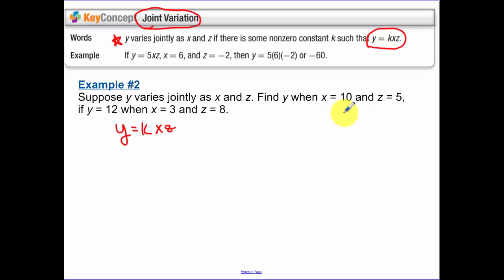Find y when x equals 10 and z equals 5. But I need this bottom part. If y equals 12 when x equals 3 and z equals 8, so we have 12 equals k times 24. So solving for k, we get 1 half. So our general variation function is y equals 1 half xz.